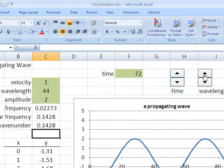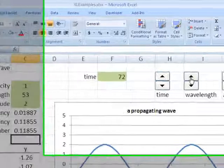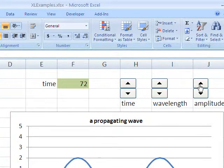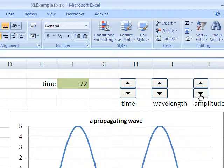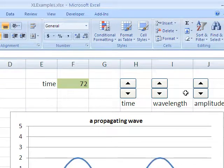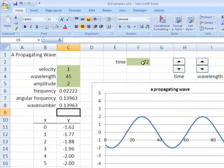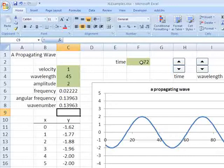I can also change the wavelength and the amplitude of the wave. So what these three controls are actually doing is that they control the value in the green cells.